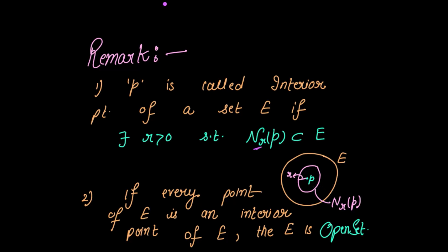And if every point of E is an interior point of E, then we say that E is an open set. So for a set to be open, all the points of the set should be interior points, or equivalently, the neighborhood of all the points of the set belongs to the set.